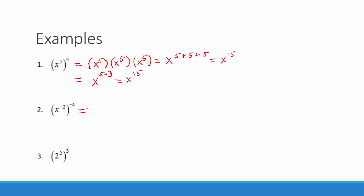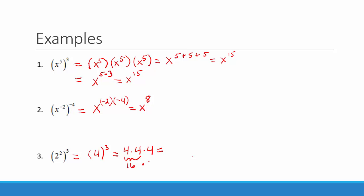We will use the power rule for our next example: x to the negative 2 raised to the negative 4. When we have a power to a power, we multiply the powers: negative 2 times negative 4 is positive 8, so we get x to the 8th. In the following problem, using order of operations, we evaluate inside the parentheses first: 2 squared equals 4, then 4 to the third means 4 times 4 times 4. 4 times 4 is 16, and 16 times 4 is 64.